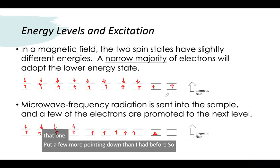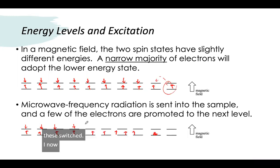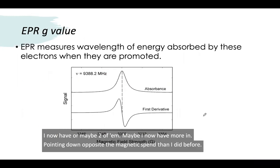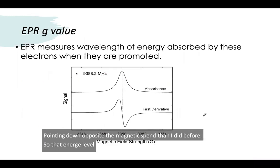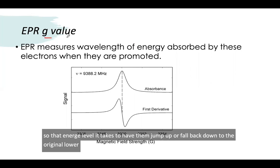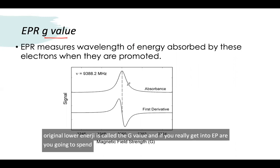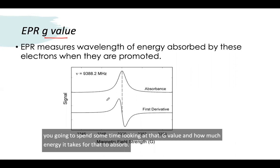So now I've got, if one of these switched, maybe more pointing down opposite the magnetic spin than I did before. That energy level it takes to have them jump up or fall back down to the original lower energy is called the g value. And if you really get into EPR you're going to spend some time looking at that g value and how much energy it takes for that to absorb. We're not going to spend a lot of time on that in this class.